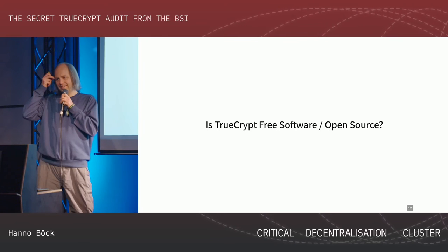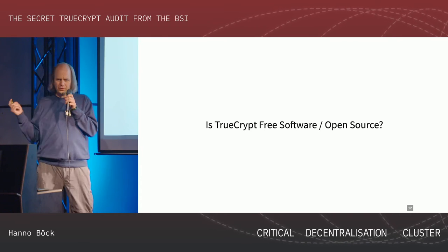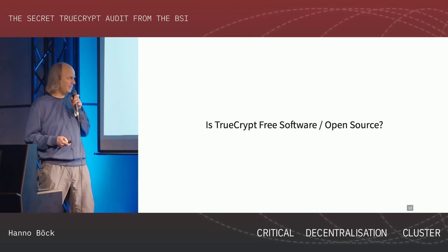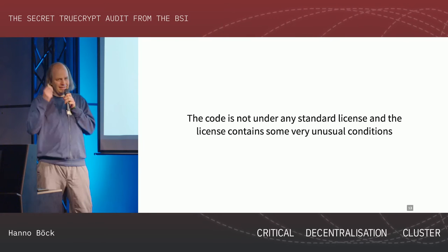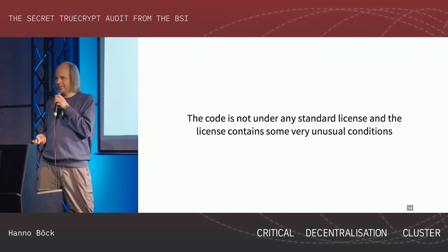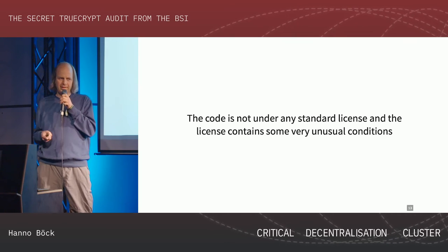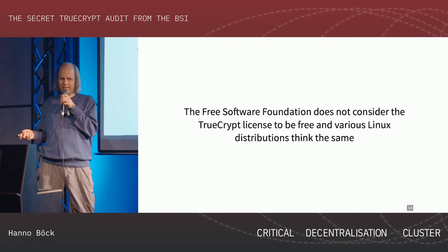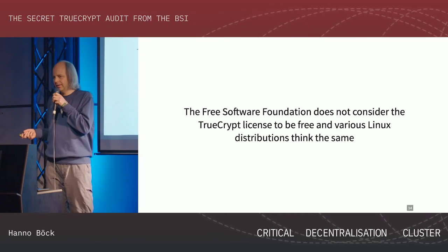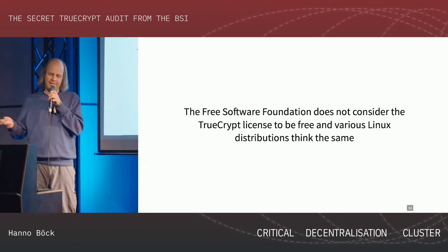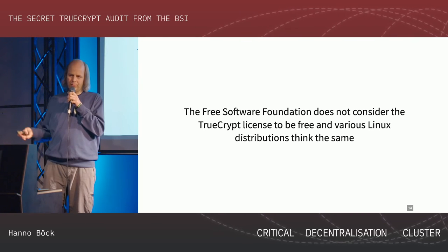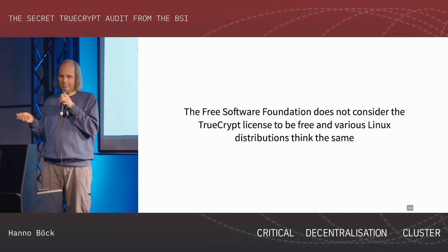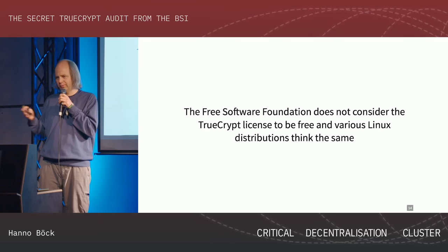One question that comes up is: is TrueCrypt open source or free software? Often it's called open source software, but people are often sloppy with these terms. Technically, this code has a non-standard license with some unusual clauses. The Free Software Foundation doesn't consider this a free license, and it's also not accepted in most Linux distributions that only distribute free software. So while you can get the source code and fork it, there are conditions that make it not free software or open source software.